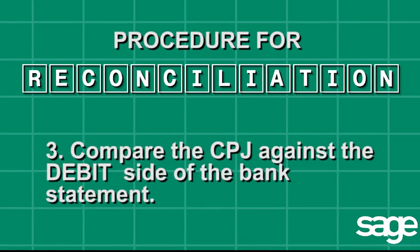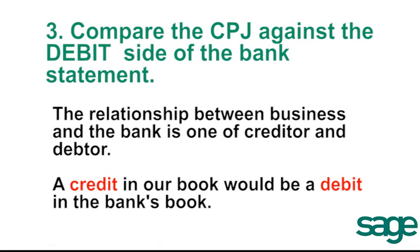Next we compare the cash payment journal against the debit side of the bank statement. Again, the credit in our books would be a debit in the bank's books.